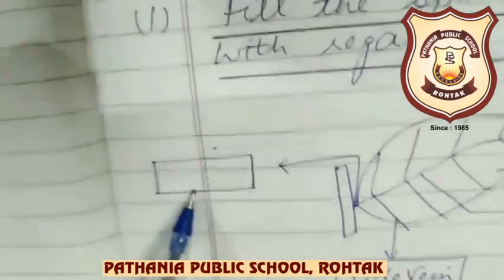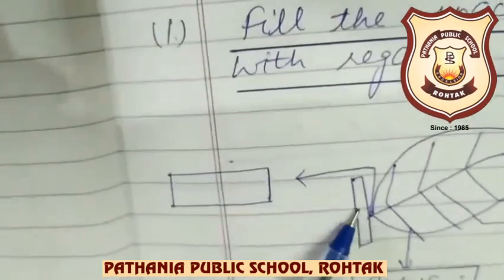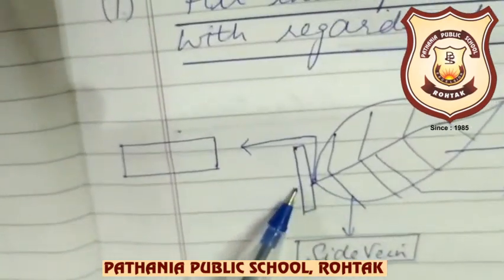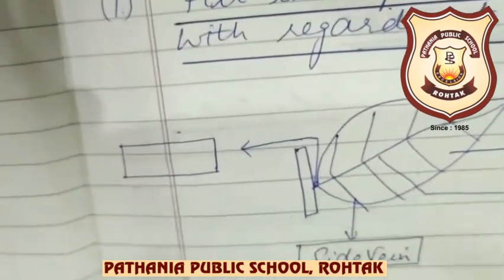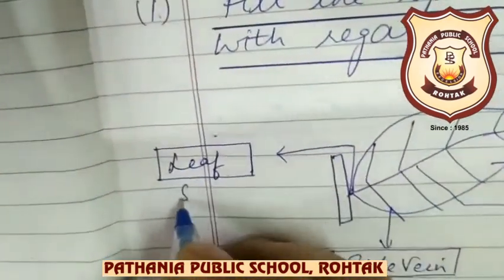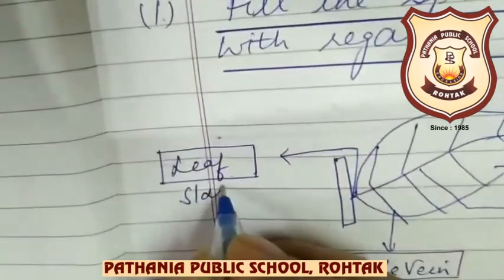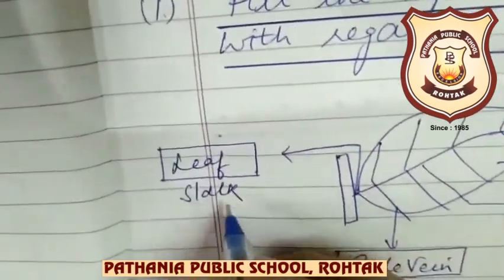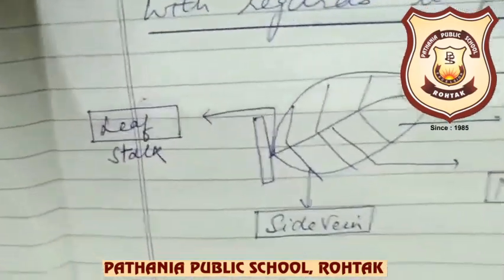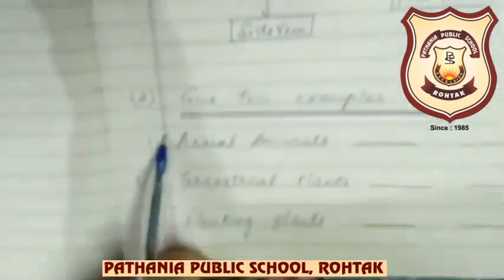What is this beta? The part that attaches the leaf to the stem is called the leaf stalk. Okay beta, now question number 2.